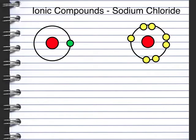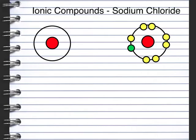Now we're going to look at how ionic compounds are formed. Here we've got an atom of sodium - we can tell this because we've got 1 electron in the outer shell. And this one is chlorine with 7 electrons in its outer shell. The sodium has 1 electron it can lose and chlorine has space for 1 electron to be gained, so that 1 electron moves to fill the outer shell. We now have Na+ and Cl-, and the charges cancel to give us a formula of NaCl.